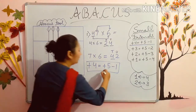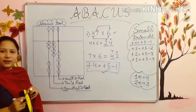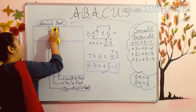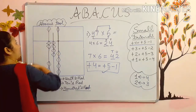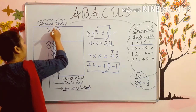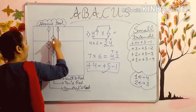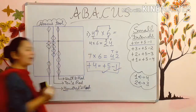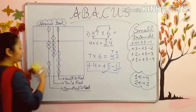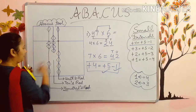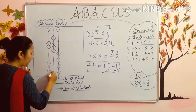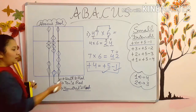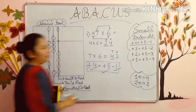Now what is the formula? First of all you have to add 5. Then you have to minus 1. Your 4 is added.